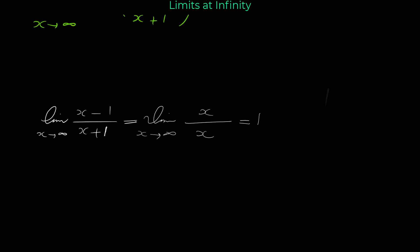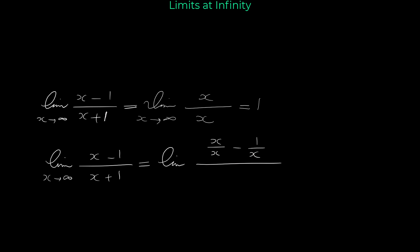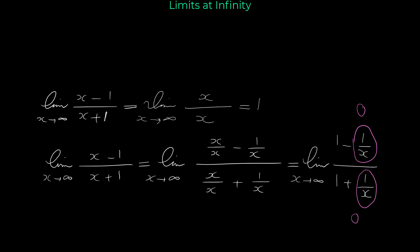To show your work without the shortcut, divide every term in the numerator and denominator by x, the highest degree of the denominator. This gives the limit of (1 minus 1/x) over (1 plus 1/x) as x approaches infinity. Since the limit of any constant over x is 0, this simplifies to 1 over 1, which equals 1 — the same answer.